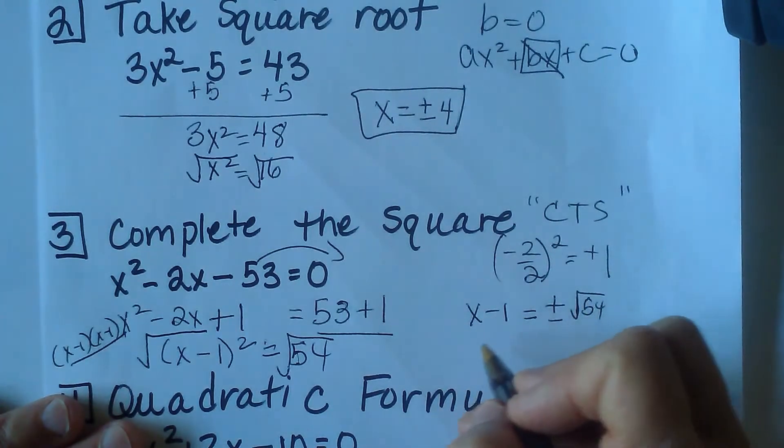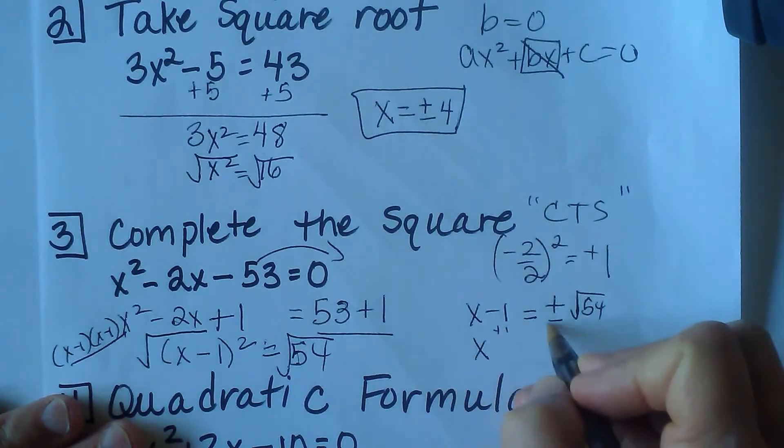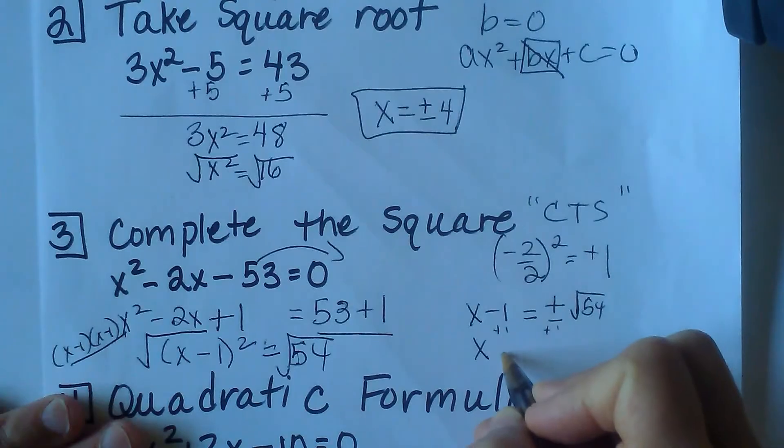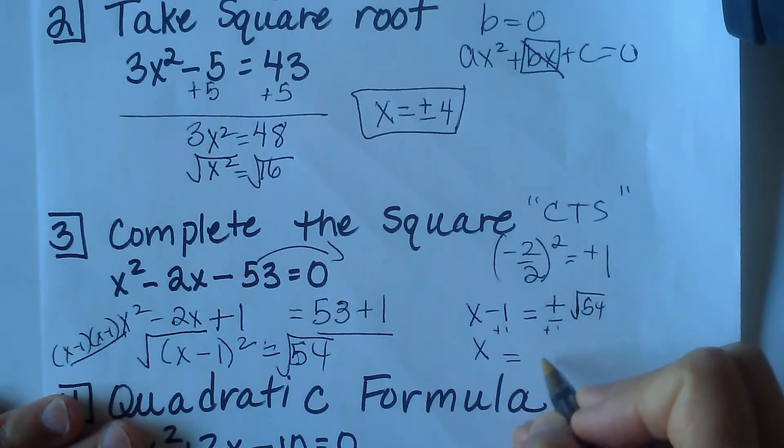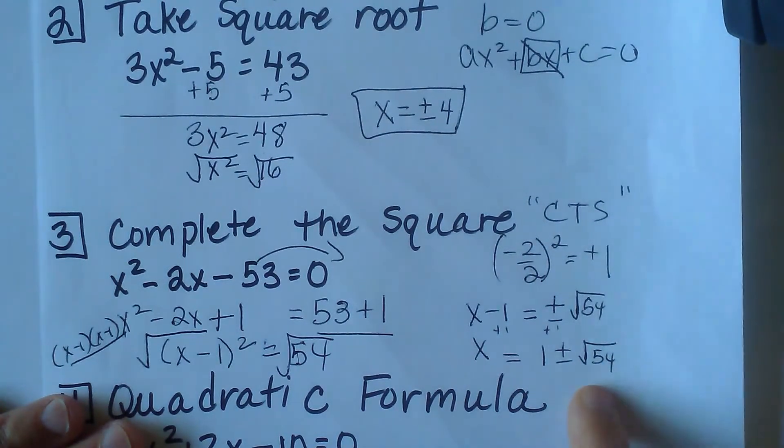Now to solve for x, we're going to add 1 to both sides. Now this is in radicals and it will simplify. We're going to do that in a second, but it won't simplify to a perfect integer. So there's our answer, 1 plus or minus root 54.